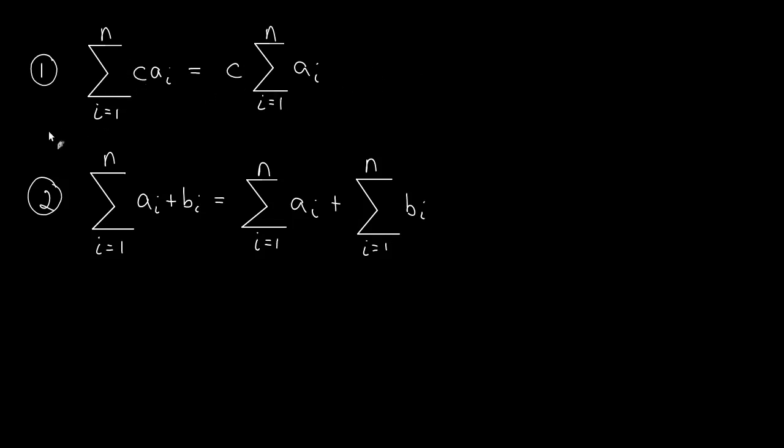This first property says that if we have a constant times our summation term, then we can just do the sum with the summation term and multiply with the constant afterwards. To really understand this, let's get an example.